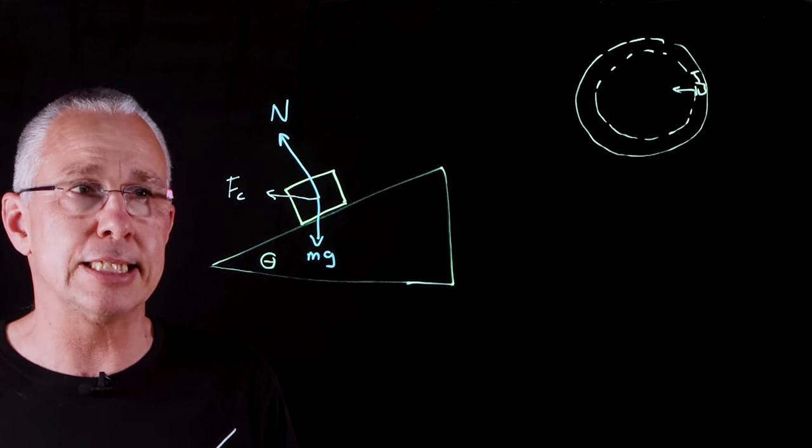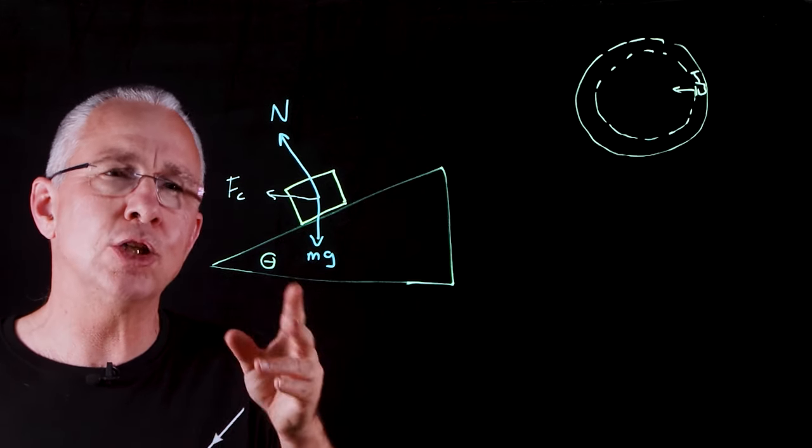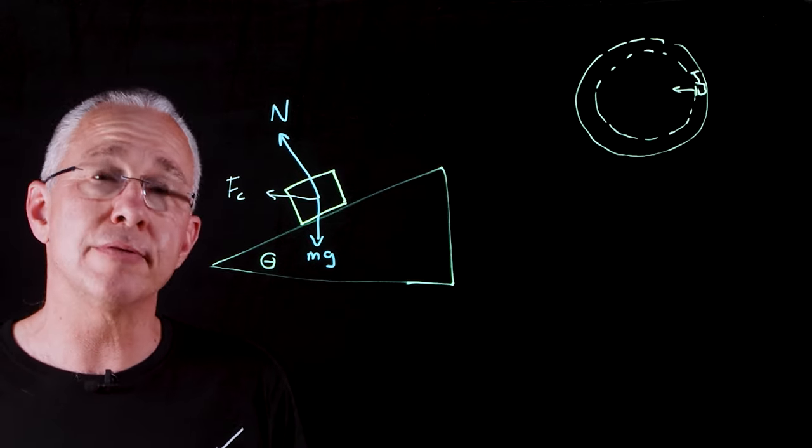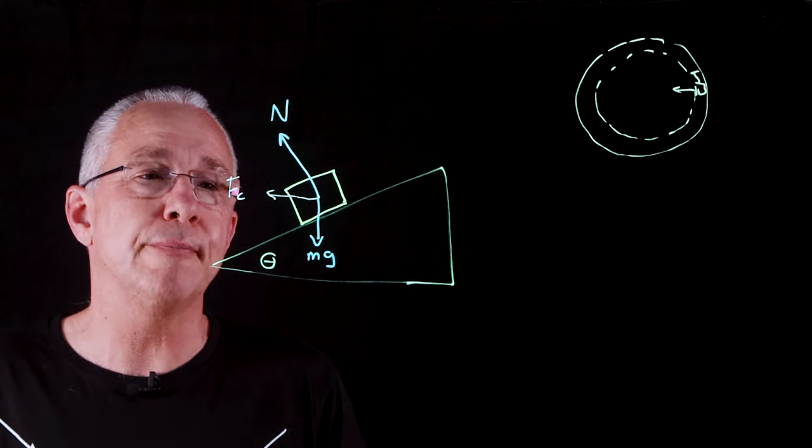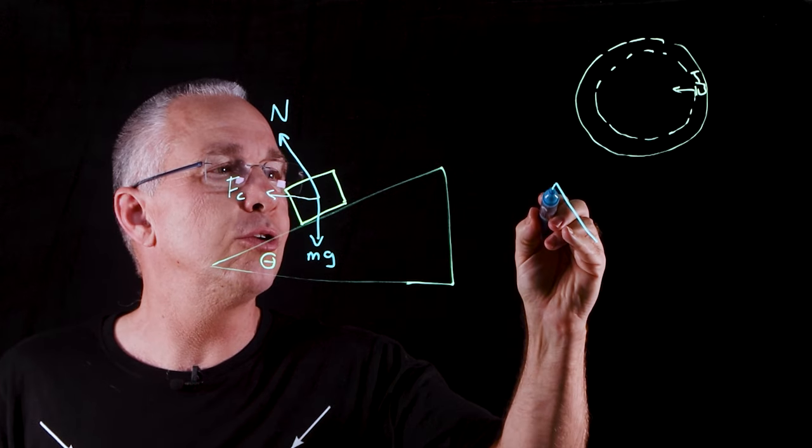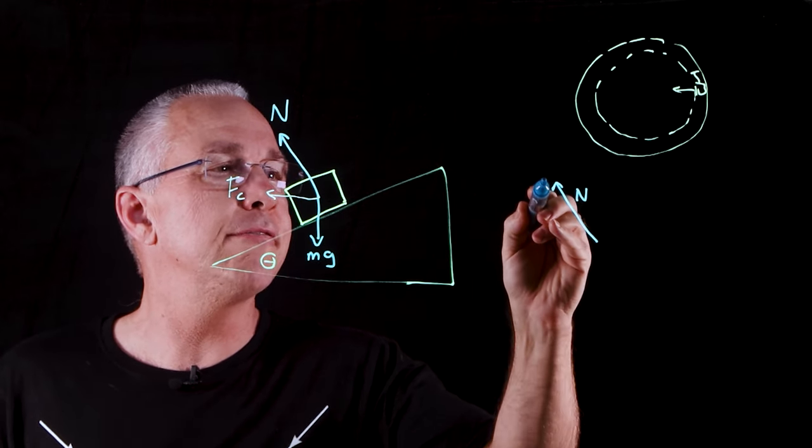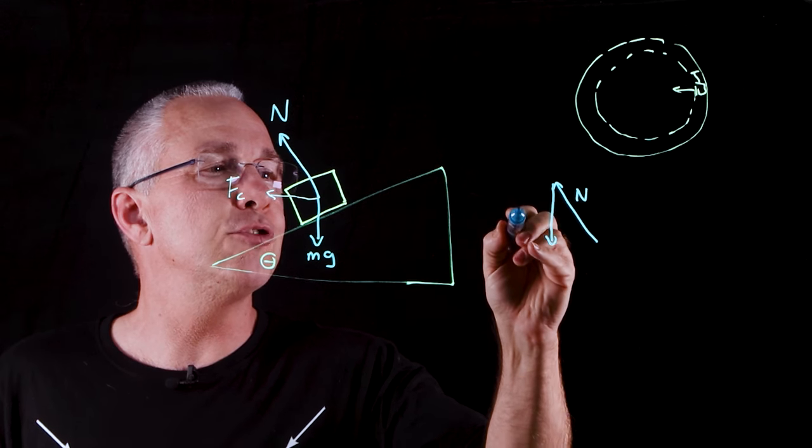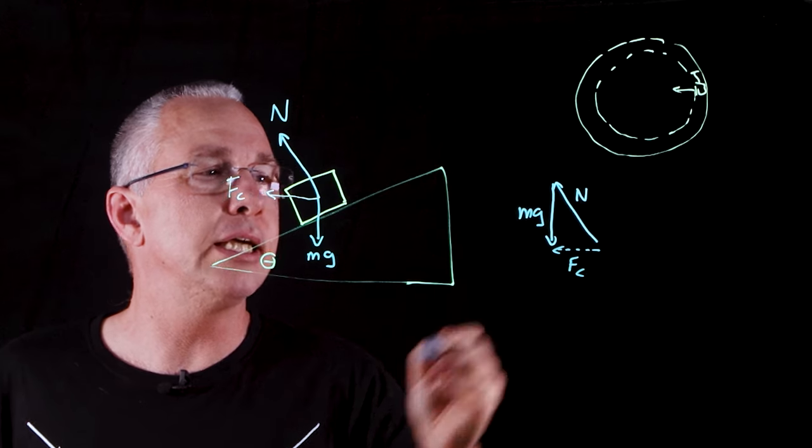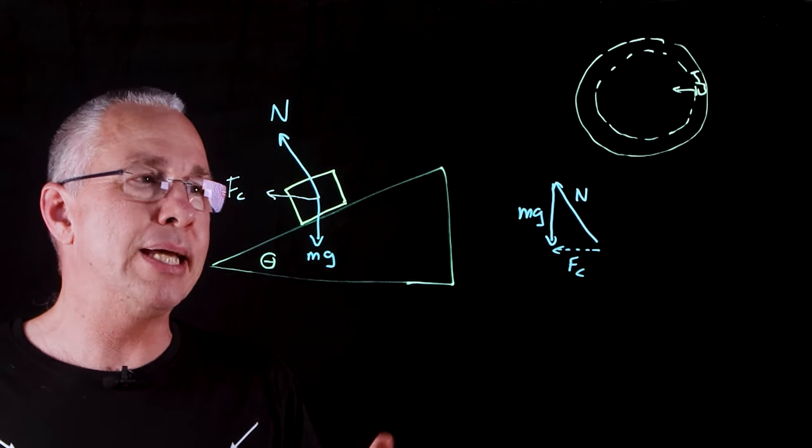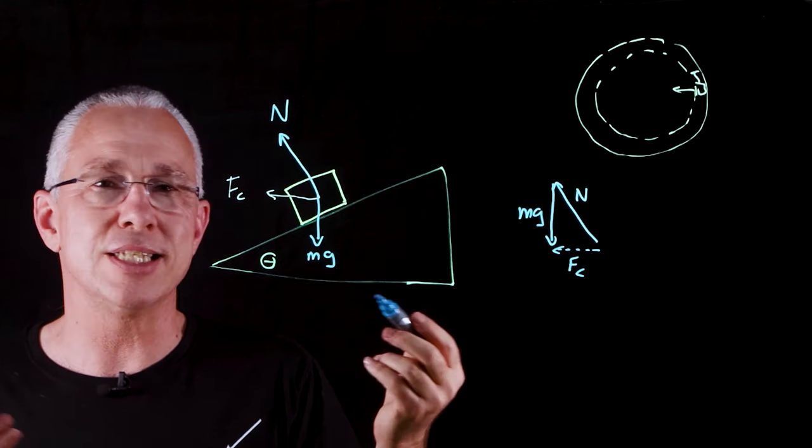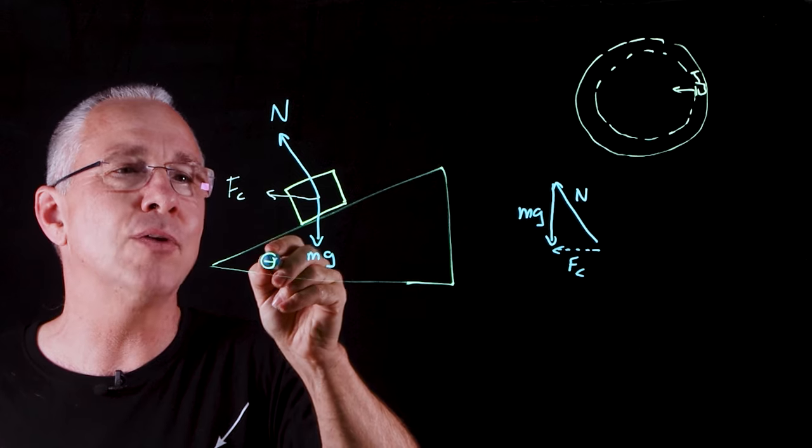Now how do we therefore combine those things? There's a couple of ways that we can do this, and one of them is simply by drawing a nice vector diagram. So for example, if I have my vector of my normal in this direction, I have my vector of my mg in that direction, I then have my net force which is Fc in that direction. And what that means is I can now actually work out mathematically the relationship, and that is because this angle right here happens to be this angle right there.